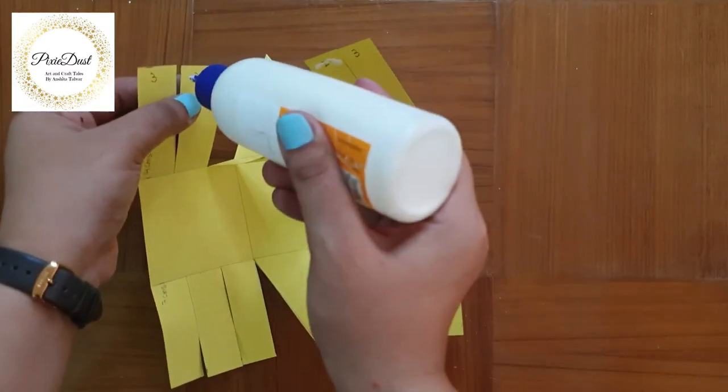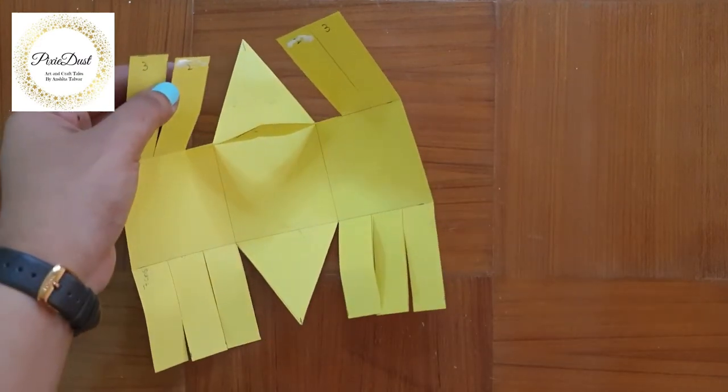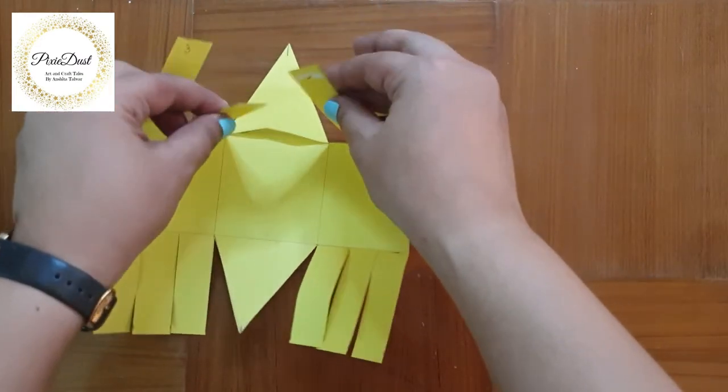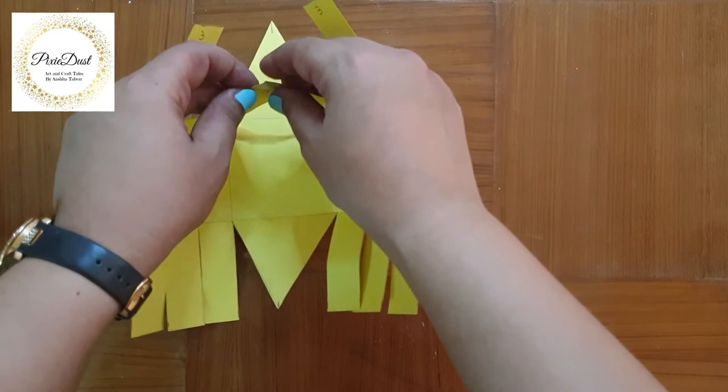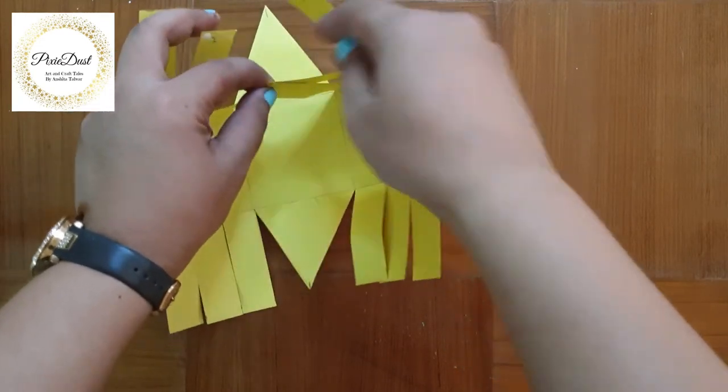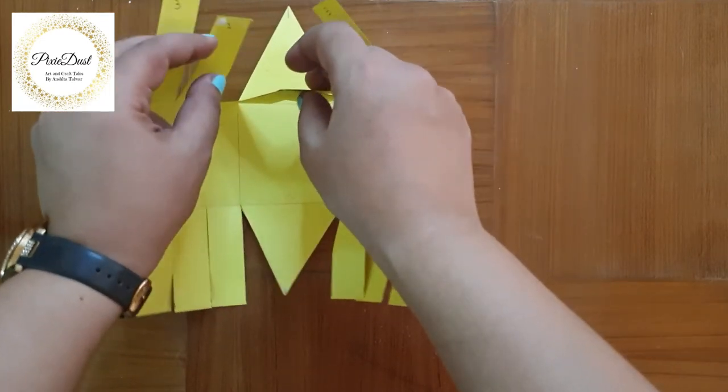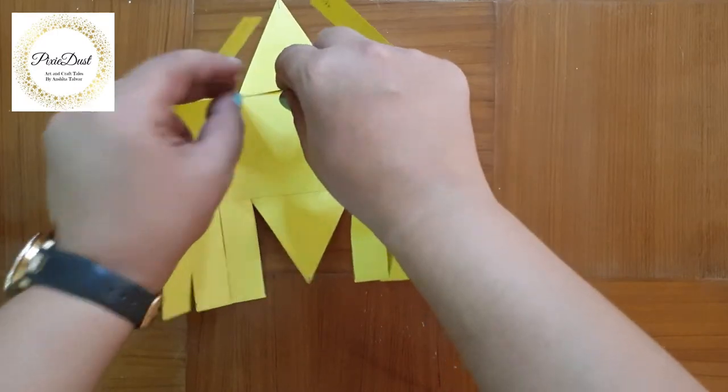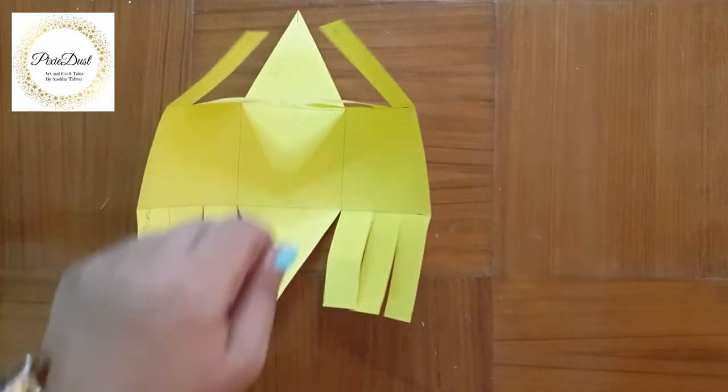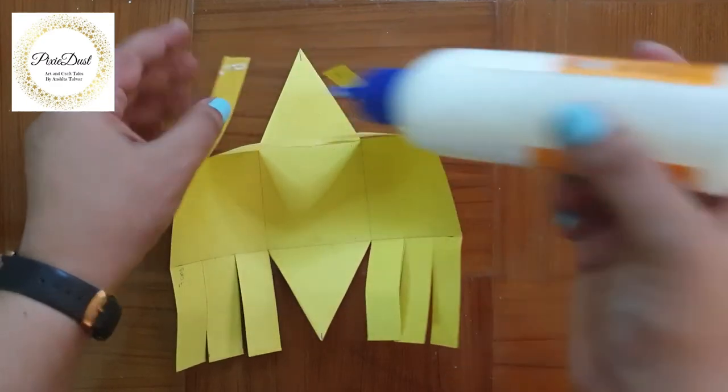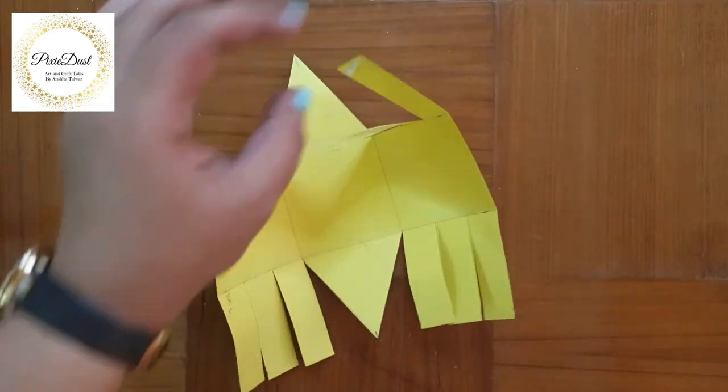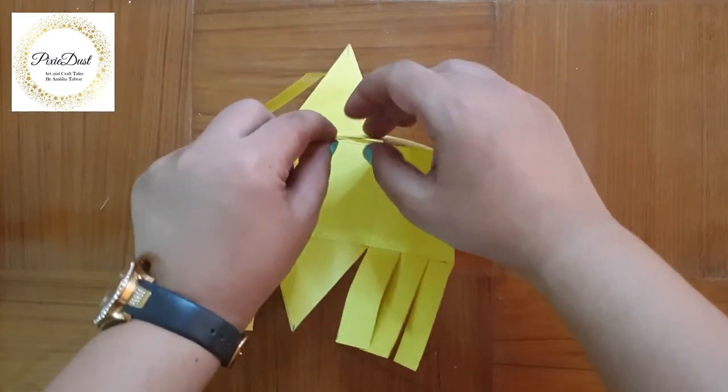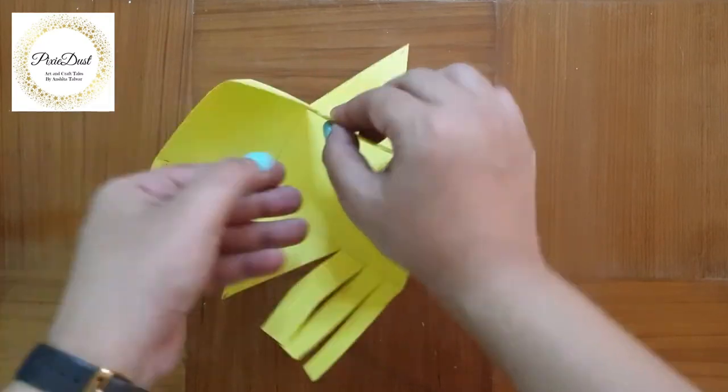Next, I'm going to glue the strips number two with each other and with the previous strips. Now I'm going to paste the last strips remaining on each side together and with the previous strips.